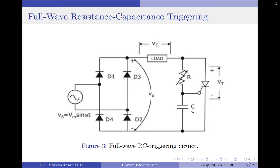The value of resistance R must be less than or equal to Vs minus Vgt (supply voltage minus gate threshold voltage) divided by the gate threshold current. Coming back to the circuit: in the positive half cycle, diodes D1 and D2 conduct and the capacitor charges at a rate decided by variable resistor R. Once the thyristor is triggered, the capacitor discharges through the gate circuitry until it becomes 0. In the beginning of the negative half cycle, the capacitor is once again ready to charge from 0.